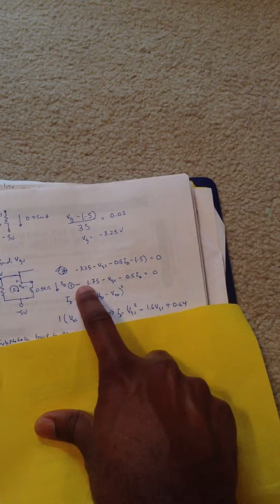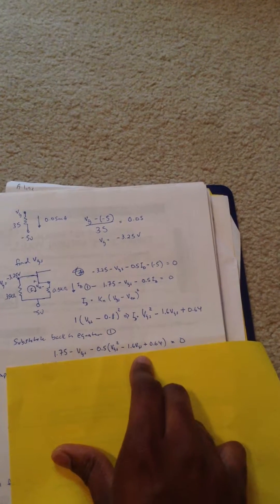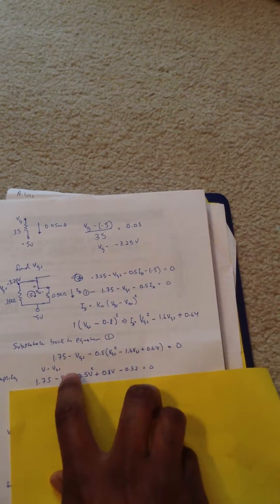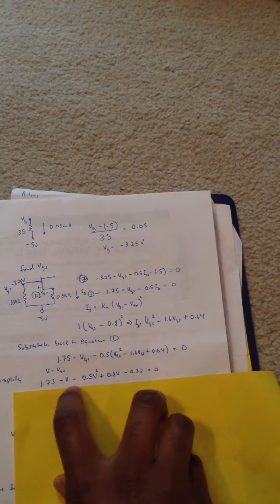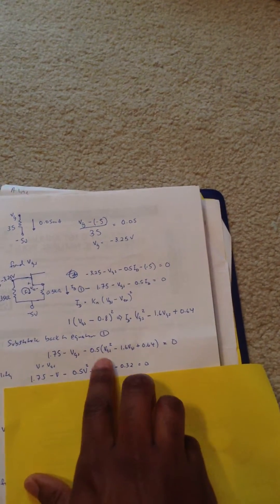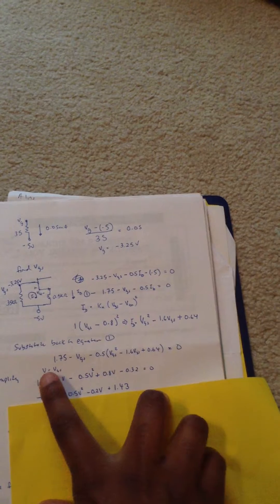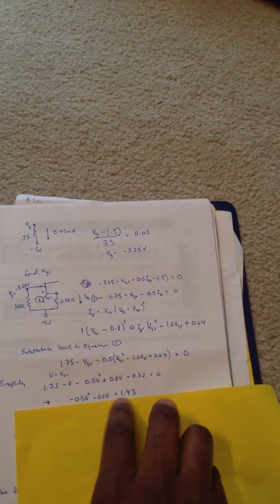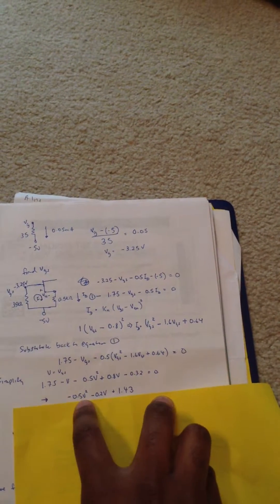Once we have this, we're going to plug it back into this equation, which is given here. And we simplify again. To make it easier, I just made V equal to VGS, so I don't have to keep writing VGS. And we distributed this negative 2.5 over this. That's given here. Then we simplify it again, combining the constants here. And we can combine these Vs here. That's given by this. And then we use quadratic equation to solve for VGS.